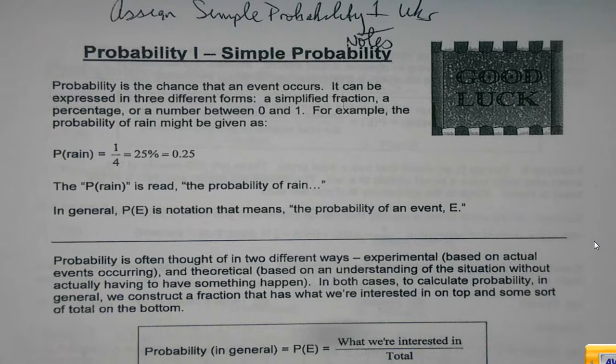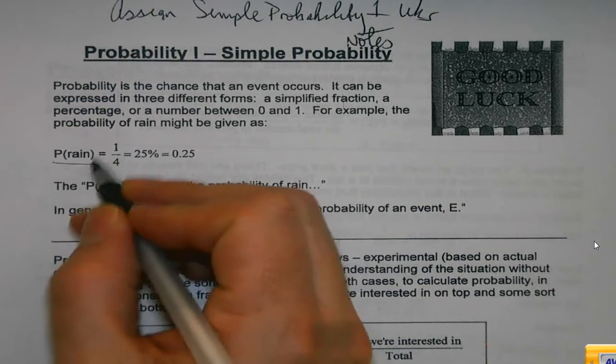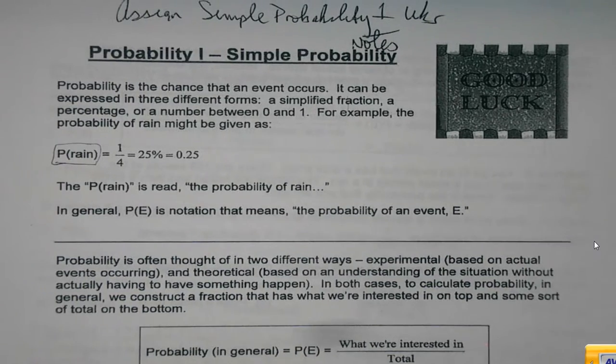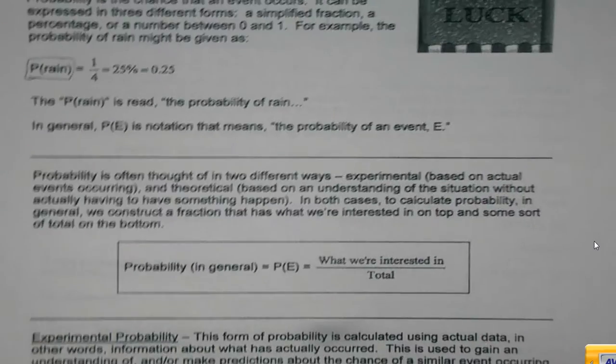When we're talking about probability, we're normally going to see something that looks like this. It's kind of our mathematical shortcut way of saying the probability of whatever's in the parentheses occurring is, and then we have the value afterwards. When we do generic, or what we call simple probability, there's two types that we get into: experimental and theoretical.